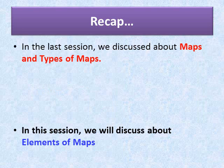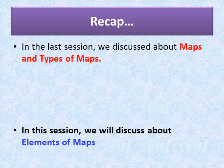Before going into today's session, let us have a recap of what we learned in the last session. We discussed about maps and the types of maps. A map is a representation of the earth as a whole or a part of the earth drawn on a flat surface according to a given scale. It can show countries, continents, cities and even local areas. It is very easy to handle as it can be carried, rolled up, folded, or stored in computers.